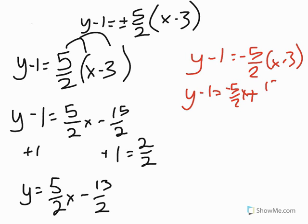So I end up with a positive 15 halves. And I'm going to add 1 to both sides, and again in this case it's going to be 2 over 2, so I have my common denominators. So y equals negative 5 halves x, plus 15 halves plus 2 halves is 17 halves.